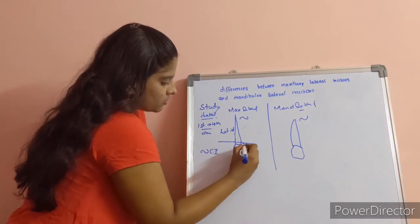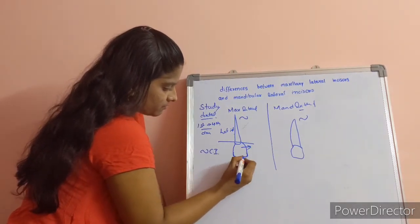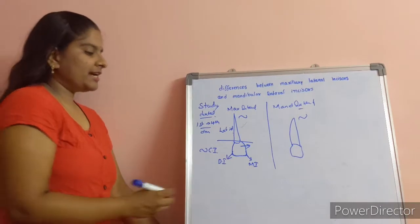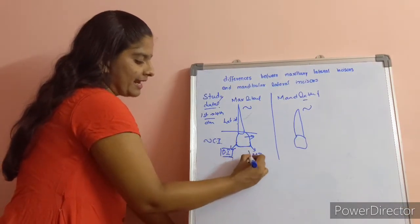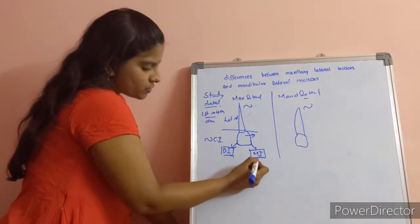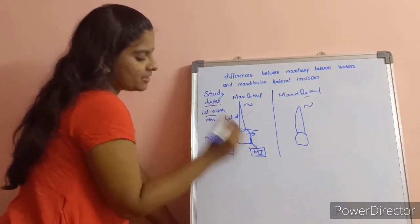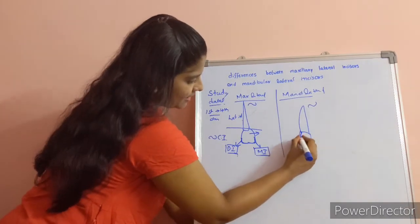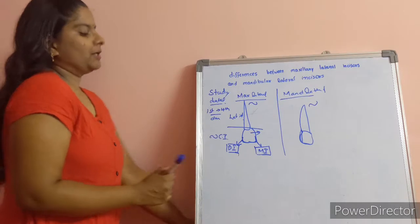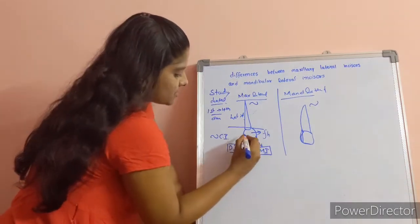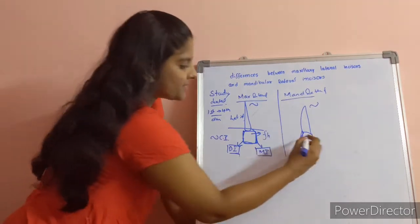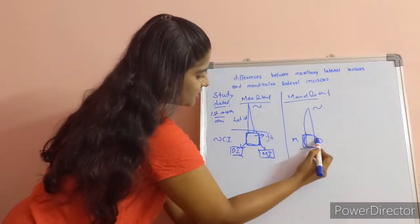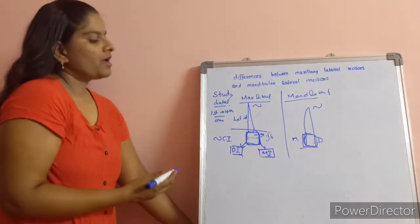First, we look at the disto-incisor line angle and mesio-incisor line angle, which help us differentiate left and right. In the maxillary lateral incisor, both the mesio-incisor and disto-incisor line angles are rounded. In the mandibular lateral incisor, the disto-incisor angle is slightly more rounded than the mesio-incisor angle, which is flatter. The crown appears flat from the labial side but is more convex from mesial to distal.